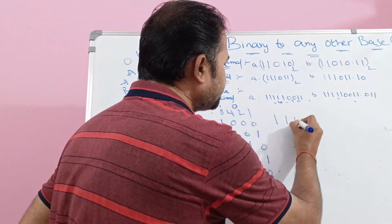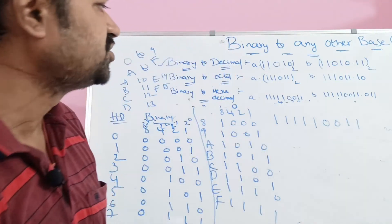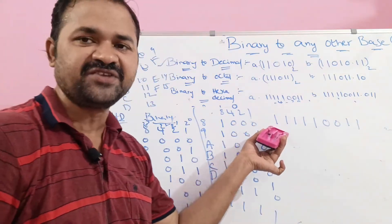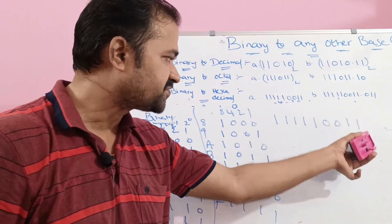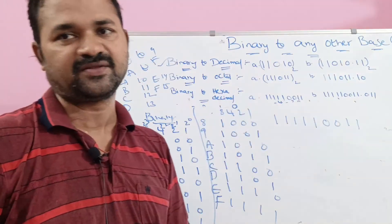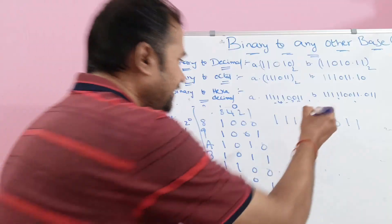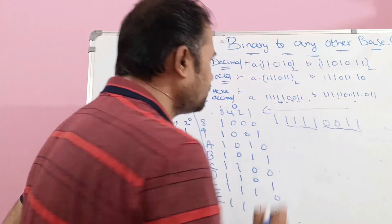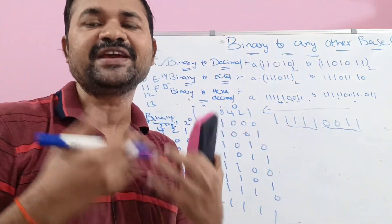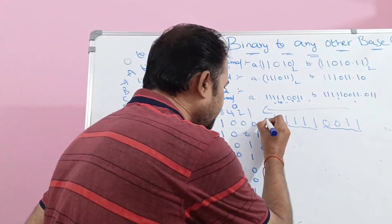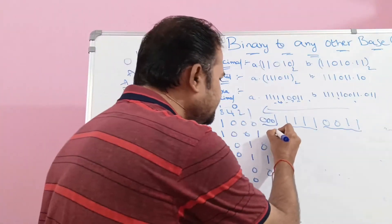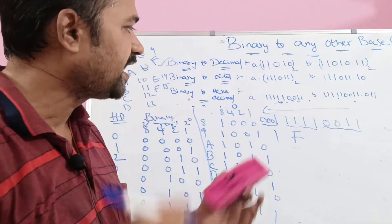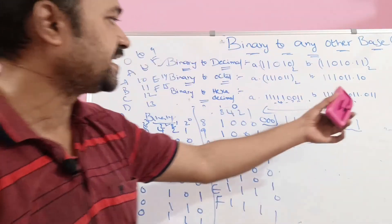First problem: binary number 111110011. Starting from the rightmost bit (LSB) and grouping 4 bits each: group 0011 = 3, group 1111 = 15 = F, group 0001 (appending three zeros to the leftmost single bit 1) = 1. So the hexadecimal result is 1F3.